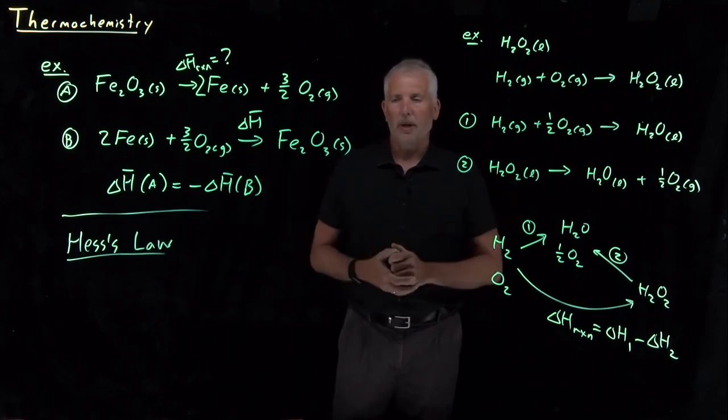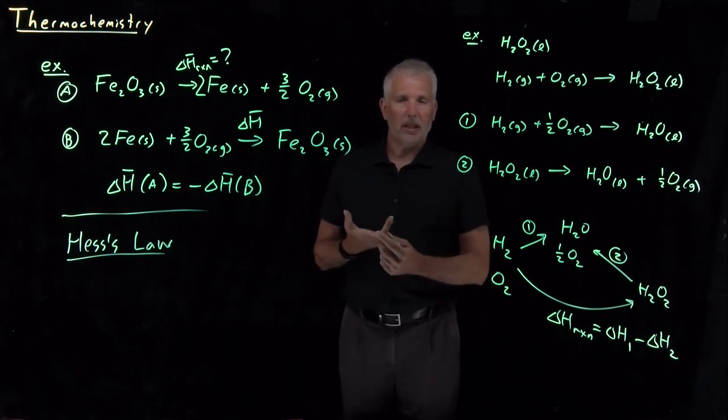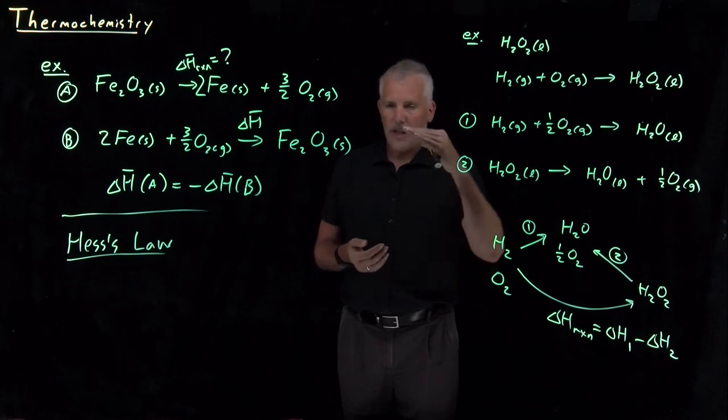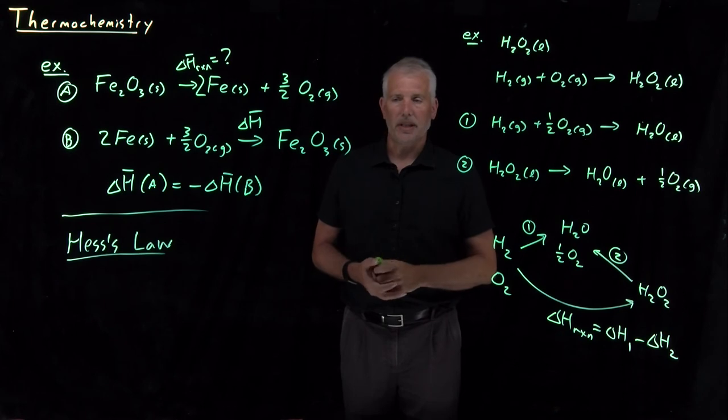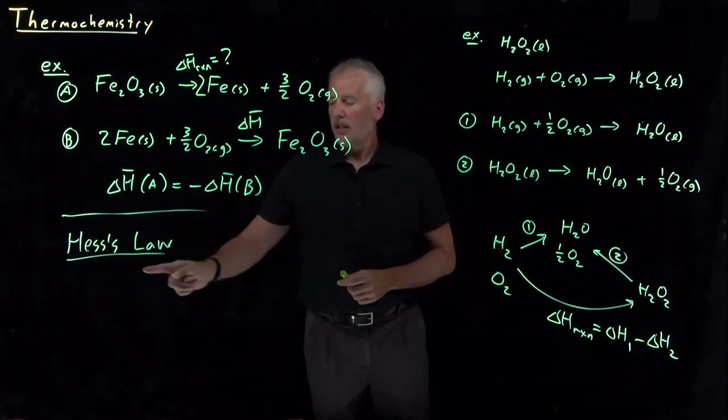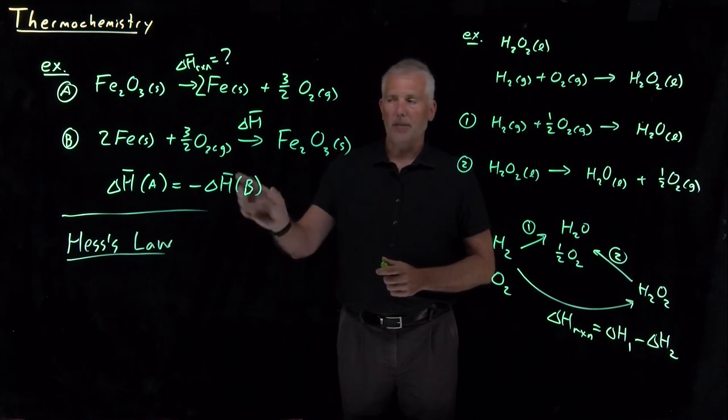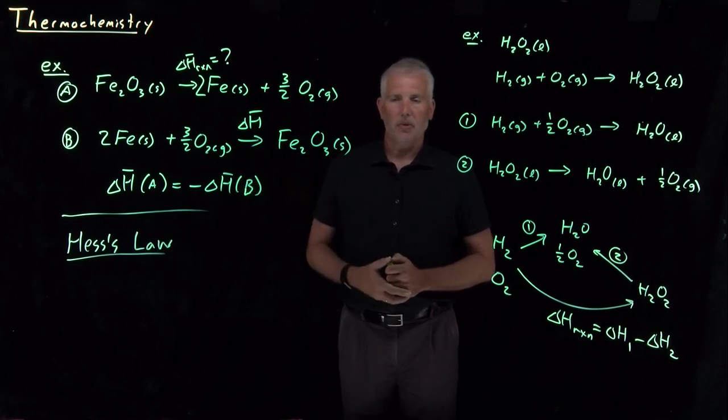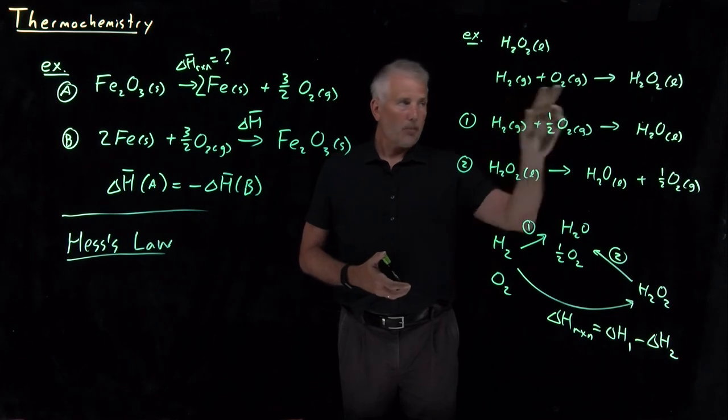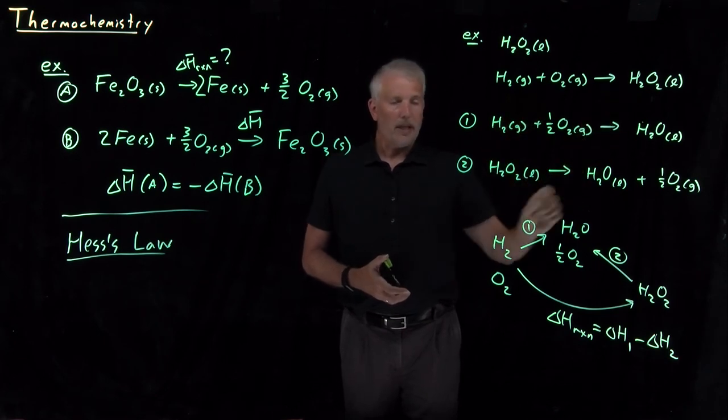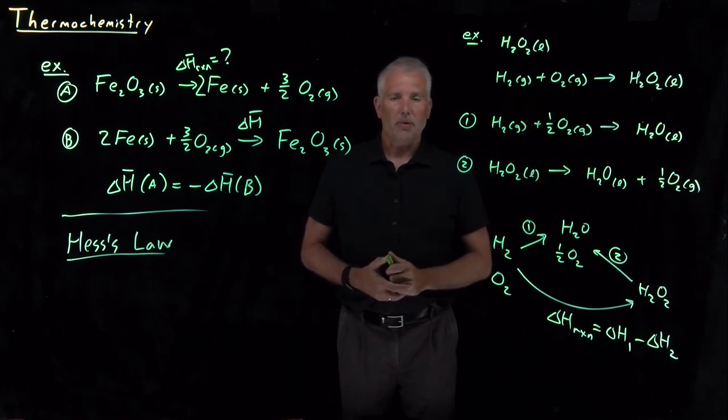We could go through many other examples. If I double a reaction, I double its enthalpy. If I add three different reactions one after another, I just add the three enthalpies together. That's essentially what Hess's law says: you combine the enthalpies algebraically the same way that you treat the chemical reactions, if you can form a reaction that you're interested in by combining simpler chemical reactions.